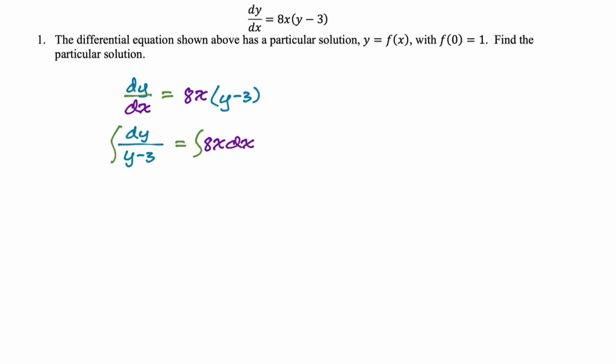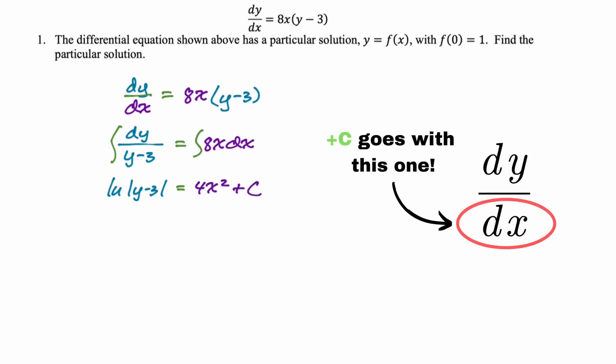So dy over y minus 3 is going to be 8x dx. We're going to throw some integral signs in here, and we integrate the left side. That's going to be a natural log, absolute value of y minus 3. And then on the right-hand side, we're just going to get 4x squared plus c. So c goes on the side with the independent variable, which in this case is x.